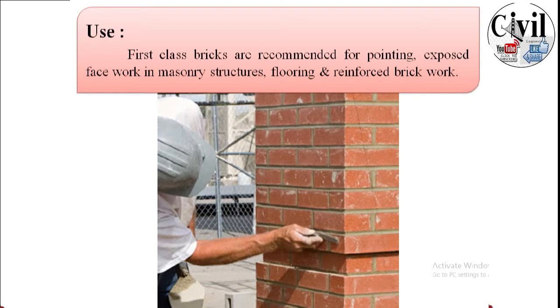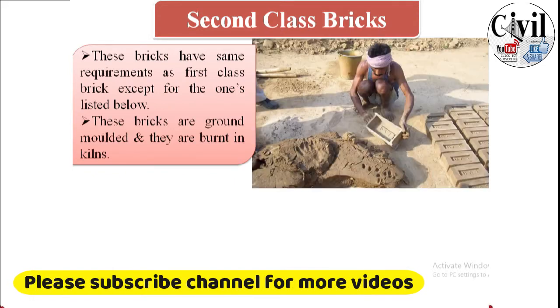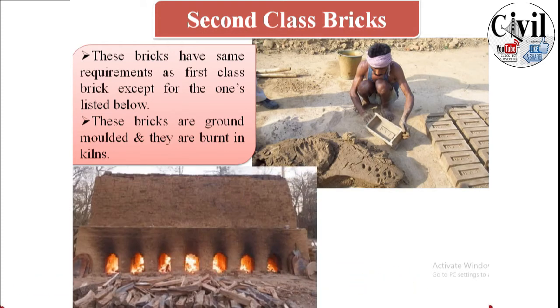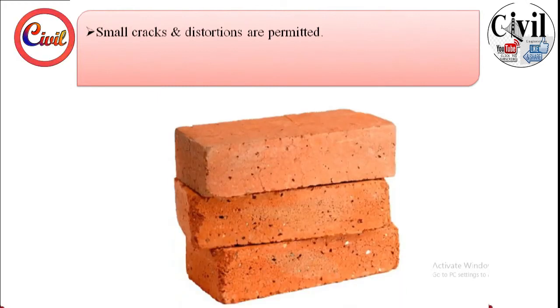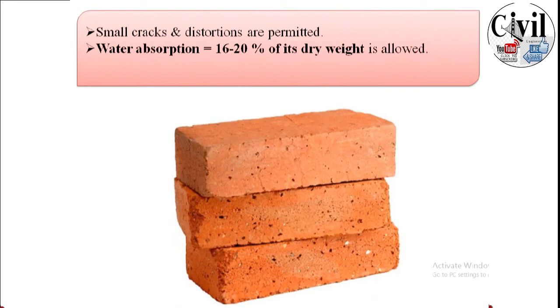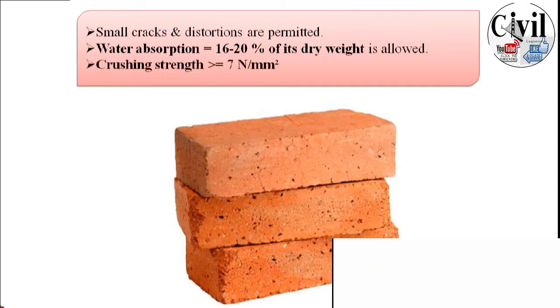Now let's discuss second class bricks. These bricks meet some requirements of first class bricks except as noted. They are ground-molded and burnt in kilns. They have small cracks and distortions that are permitted, and their water absorption is higher — about 16 to 20 percent of dry weight. Their crushing strength is normally less, at 7 newton per millimeter square.